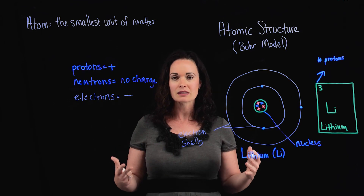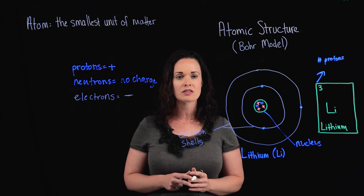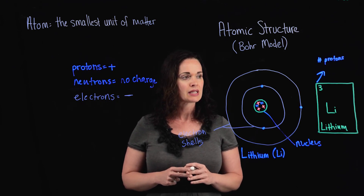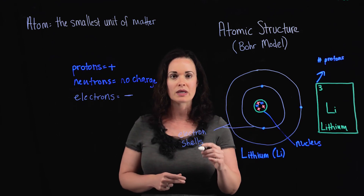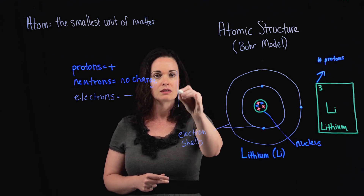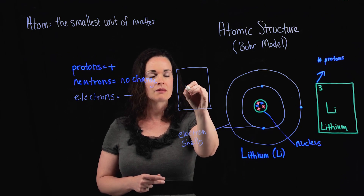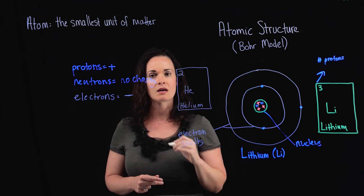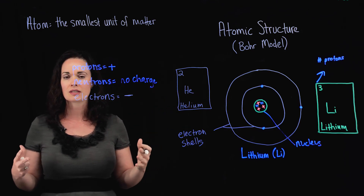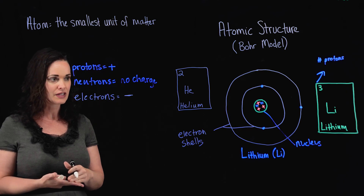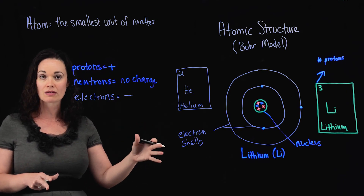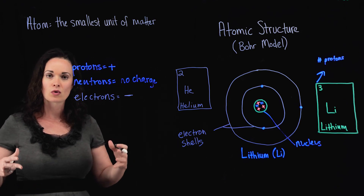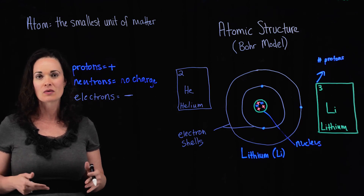I've talked about the Bohr model and about protons, neutrons, and electrons — where each of these go. Now I want you to draw a Bohr model, or at least attempt it, and I'm going to give you a simple one to start. Here's the atomic symbol, the name, and the atomic number — information you'd get from the periodic table. Go ahead and pause this video and try to draw a Bohr model of a helium atom. Make sure you get the right number of protons in the nucleus and the right number of electrons in those orbital shells. We're not going to worry about neutrons.